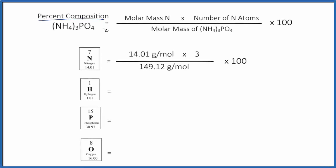Let's find the percent composition by mass for each element here in (NH4)3PO4. This is ammonium phosphate. So we'll start out with the nitrogen.